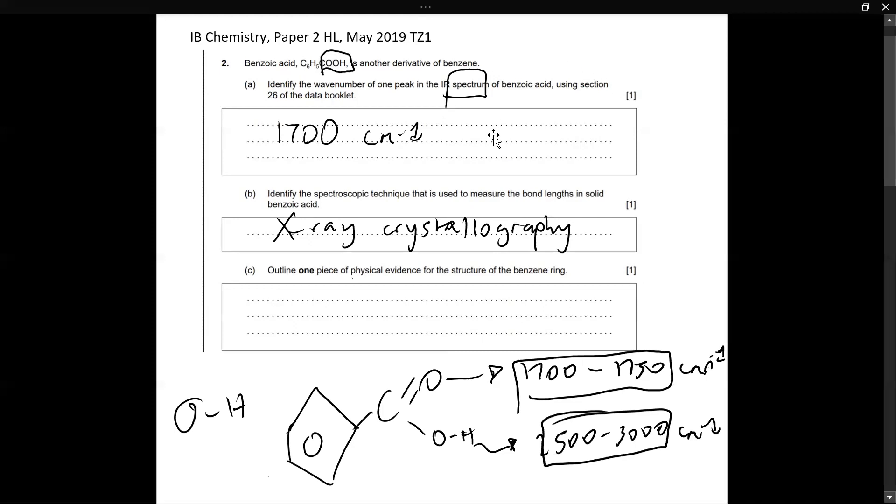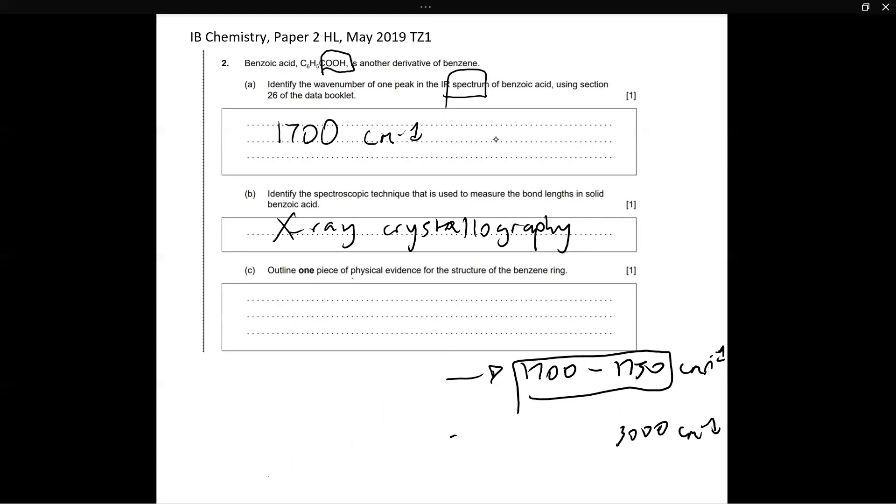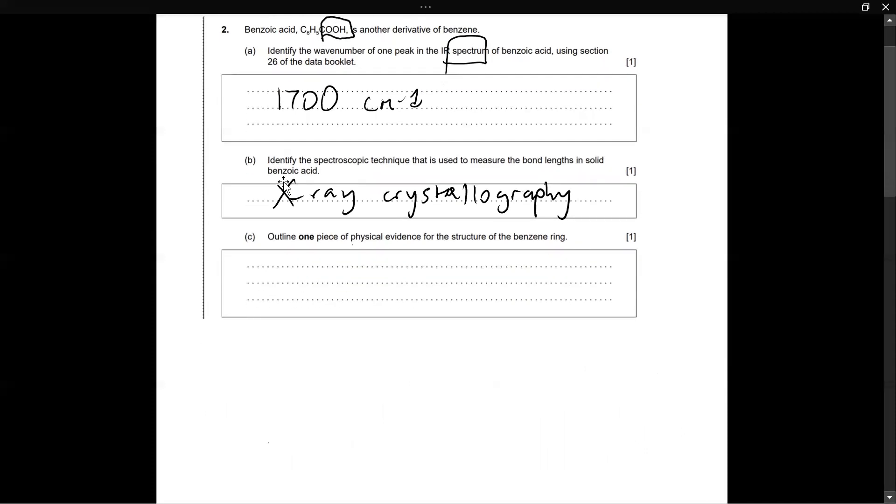Next question C: outline one piece of physical evidence for the structure of benzene ring. Now, the benzene ring, or rather the structure of the benzene ring has been in debate in the scientific community for quite some time. The structure has been changed, it's been reevaluated, evidence has come up to falsify certain structures. So I'm just going to give you a brief background about this benzene ring. The benzene ring was actually first isolated in 1825 by a scientist by the name of Michael Faraday. And the formula of benzene is pretty straightforward, it's just C6H6, and this has been known for a very long time.